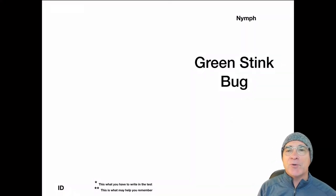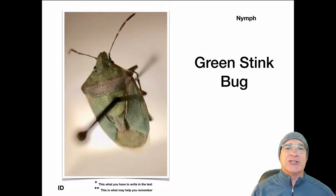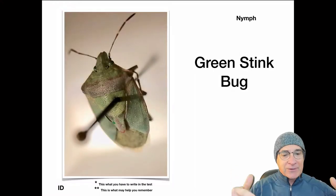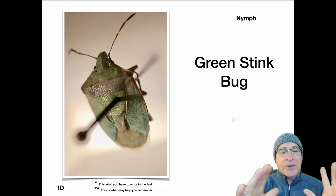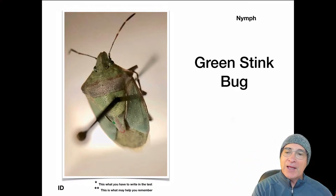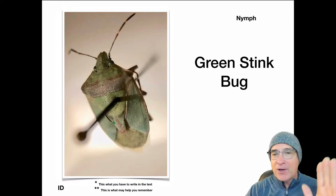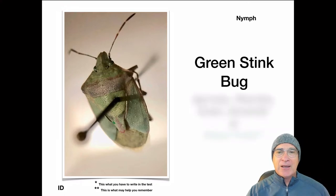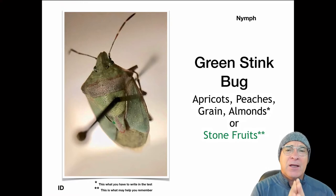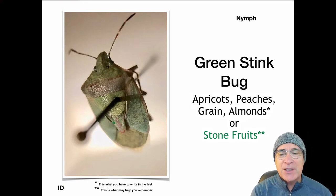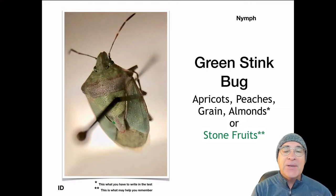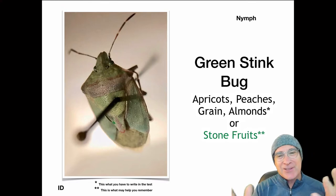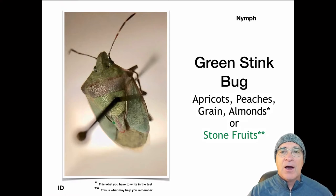We go to our next one, which is green stink bugs. They kind of look like a shield — broad across the top, coming down a little bit wider at the end, then rounding off at the bottom. They come in all different colors: green, brown, a variety of them, but they have this very distinct shield-looking shape, kind of flattened as well. Their hosts are stone fruits: apricots, peaches, almonds, and grains as well — though grains are obviously not a stone fruit.